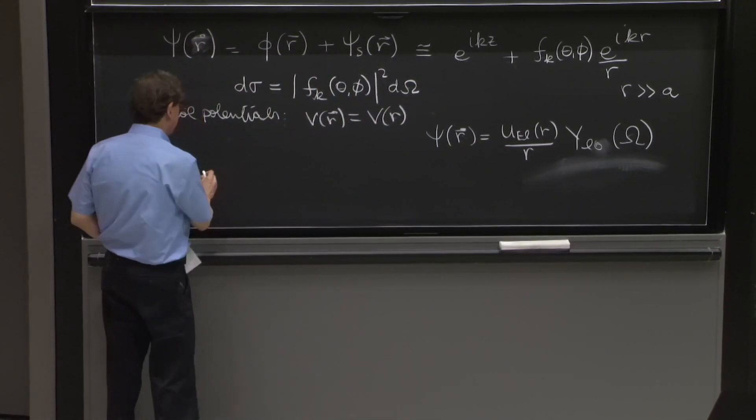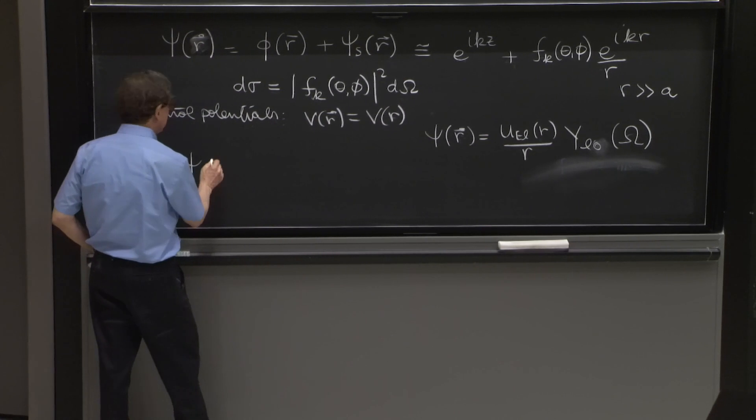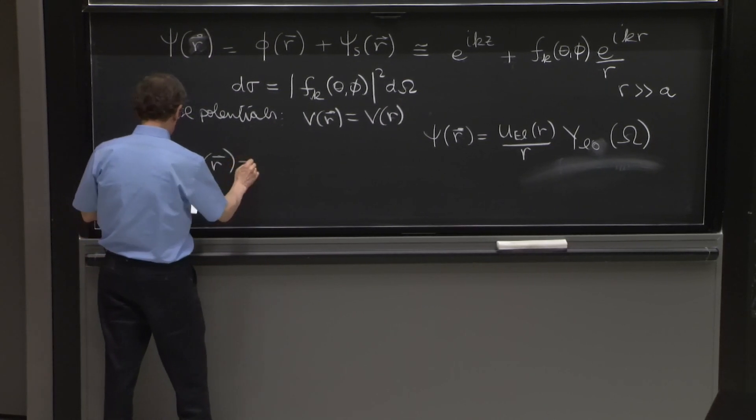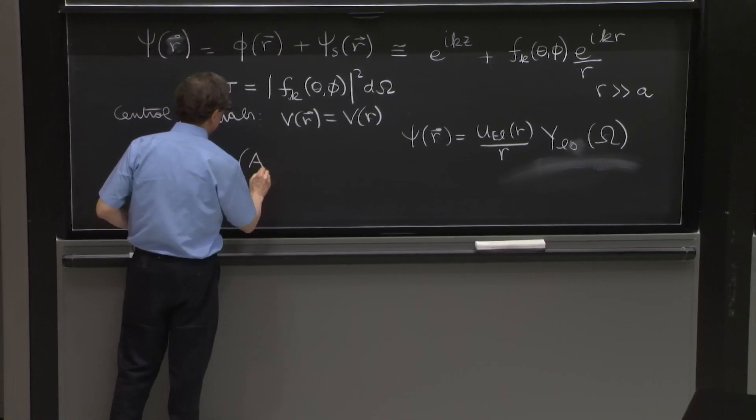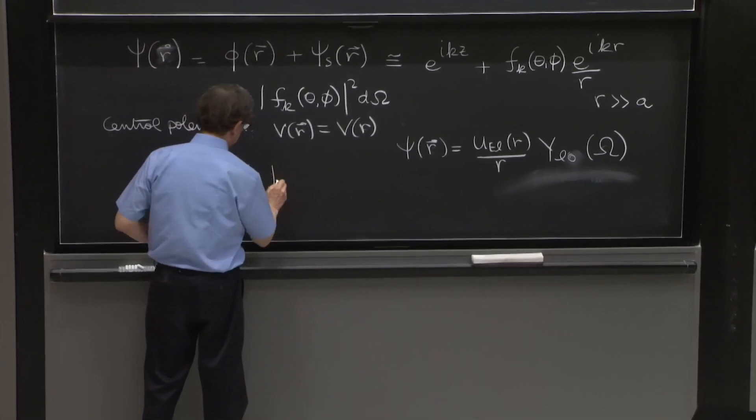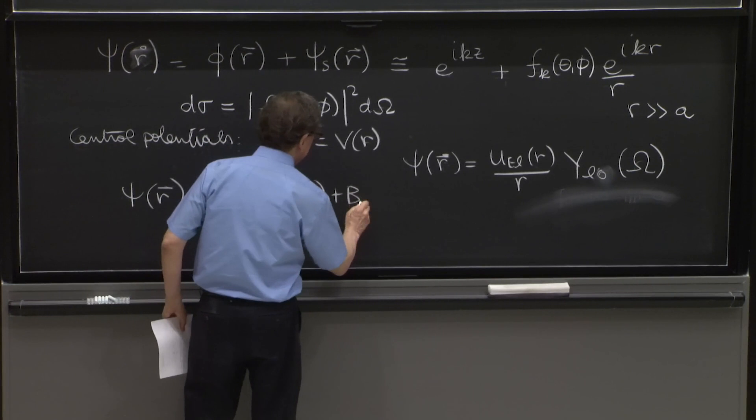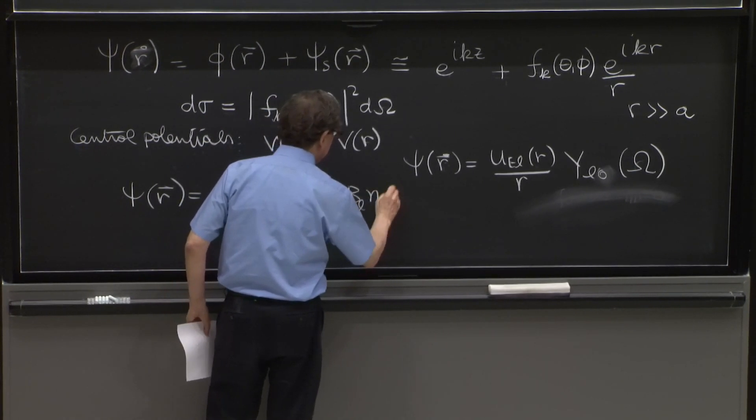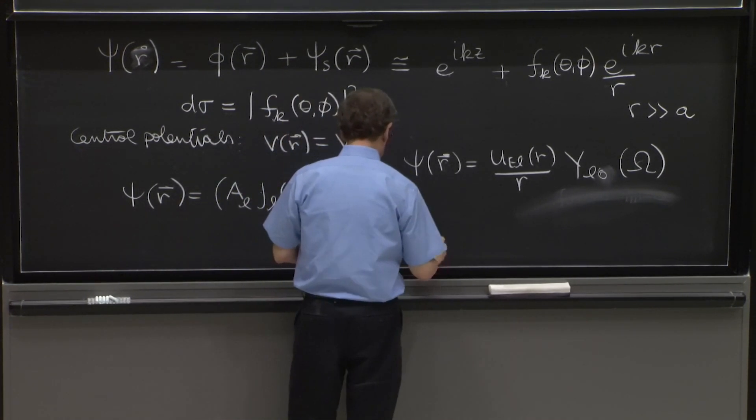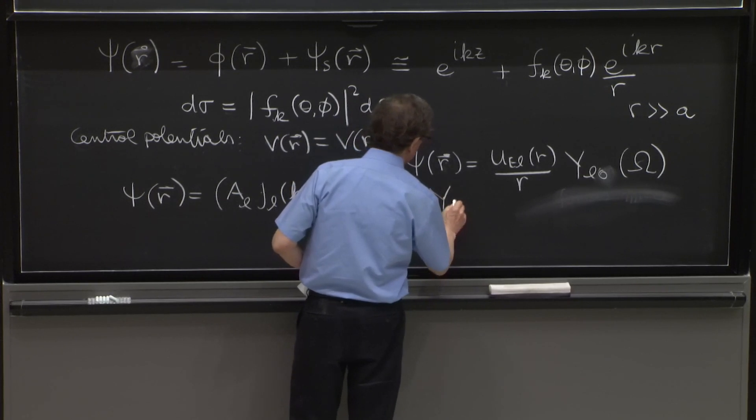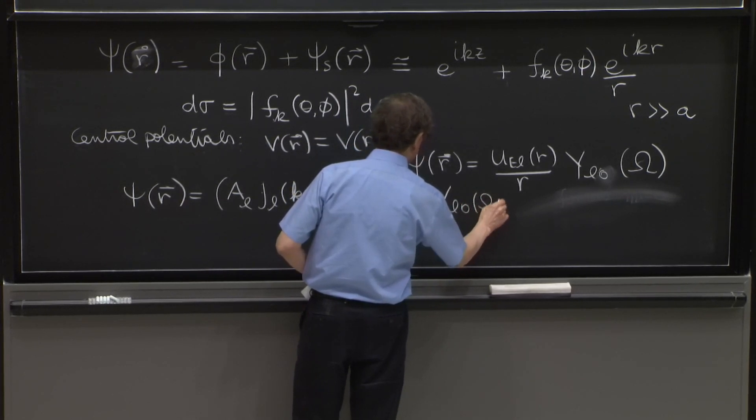And these are solutions of the radial equation. And we reviewed those and mentioned that ψ(R,r) would be given by AL JL(kr) plus BL NL(kr) times YL0 of omega. These will be our solutions.